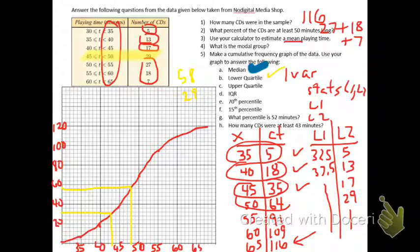My upper quartile, I can go 29 up, so it would be 87. About 55. This one's about 43.